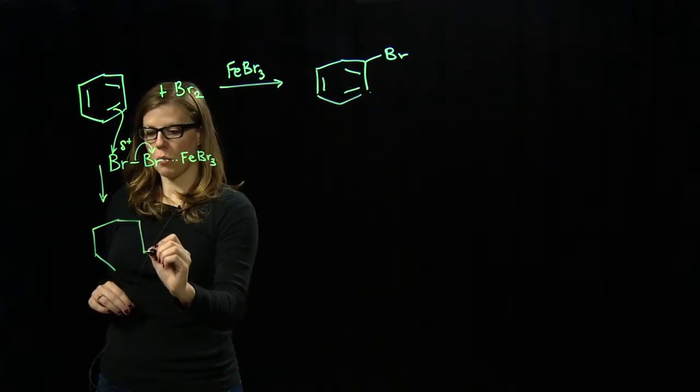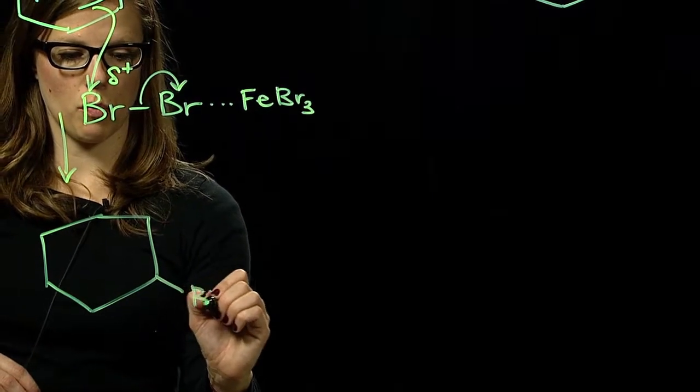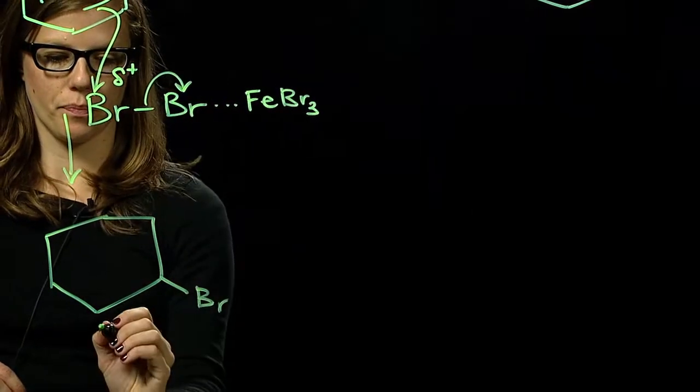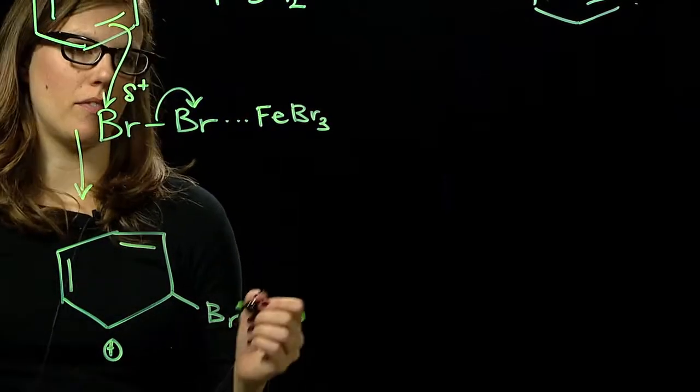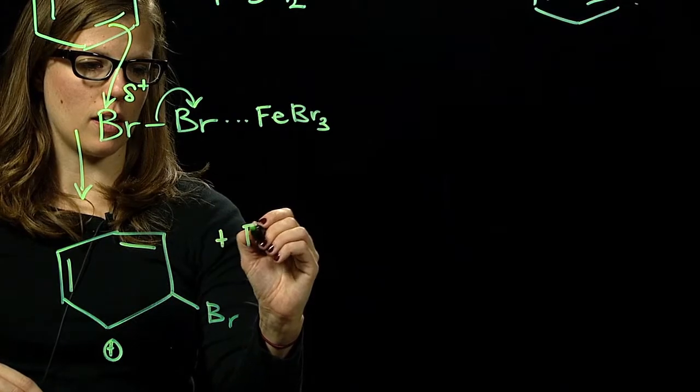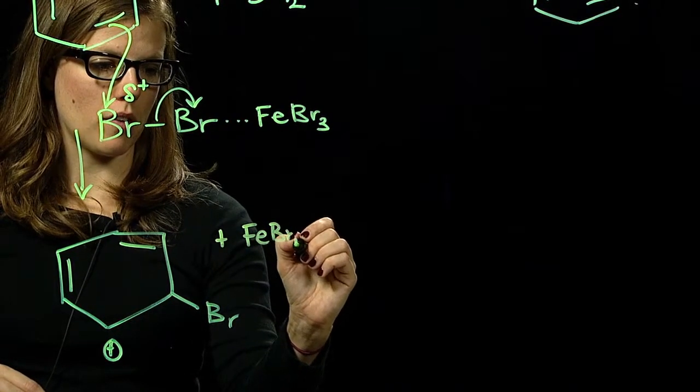So we have now made a carbocation and attached bromine to one atom of the benzene ring. And the counter ion here is FeBr4-.